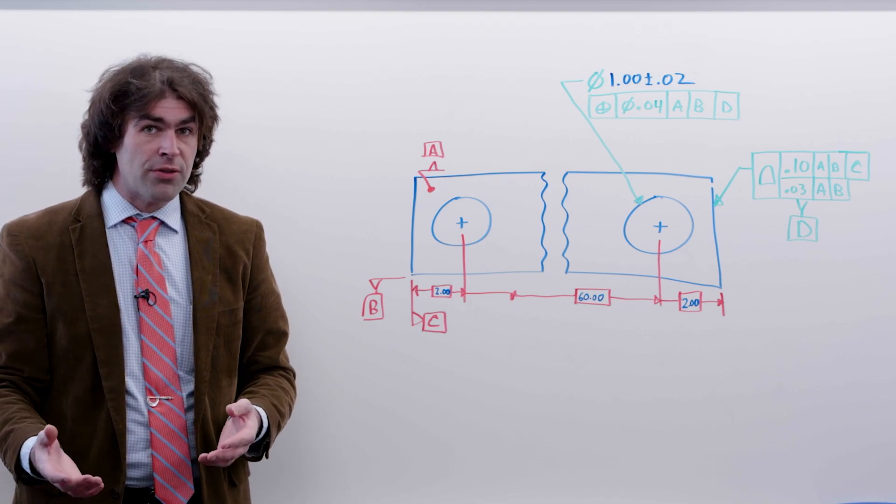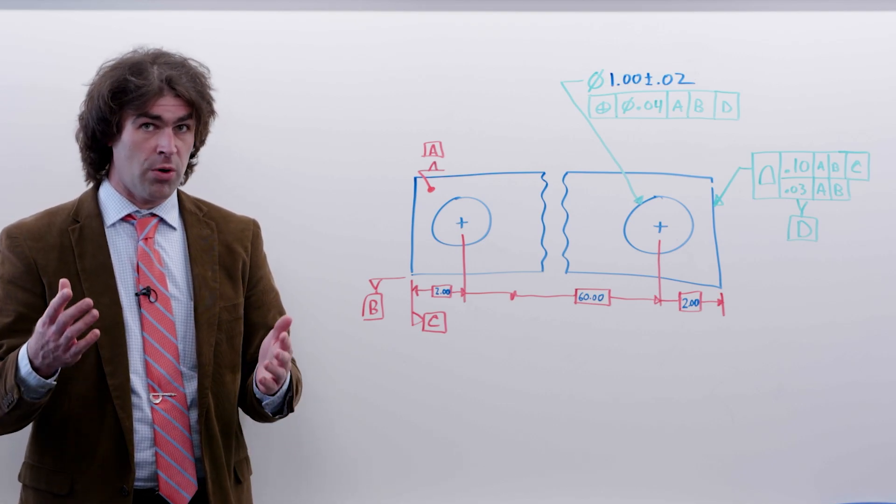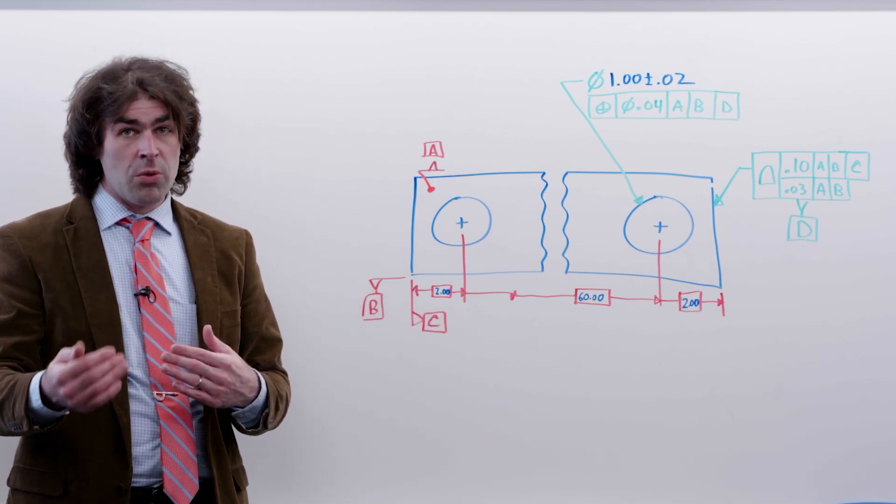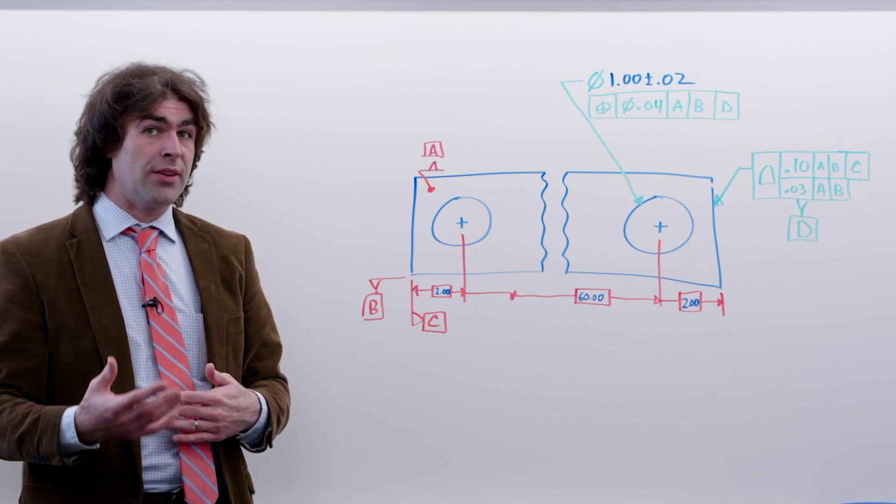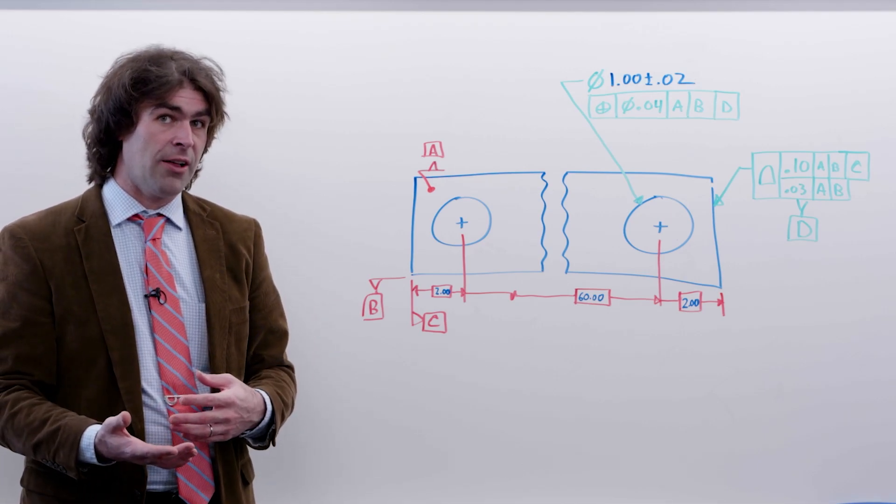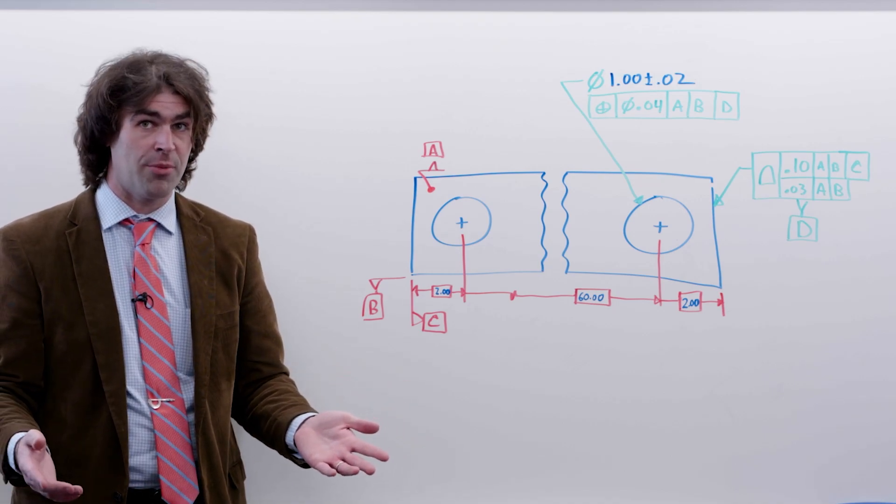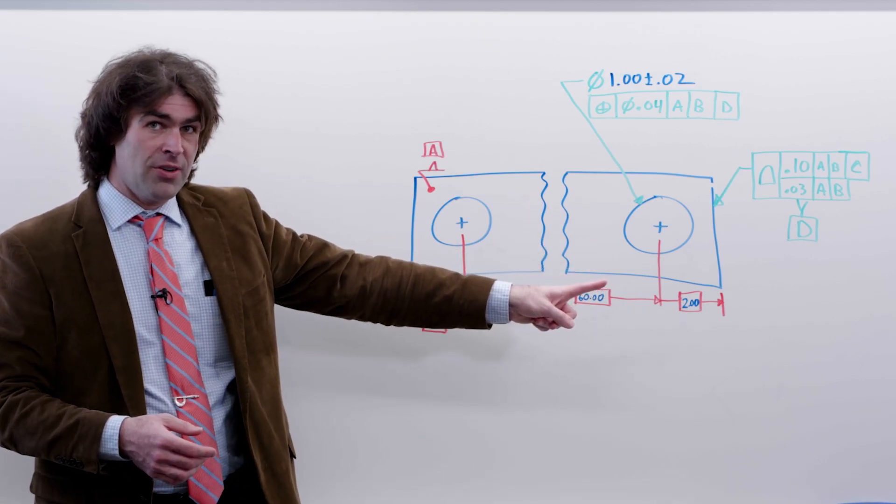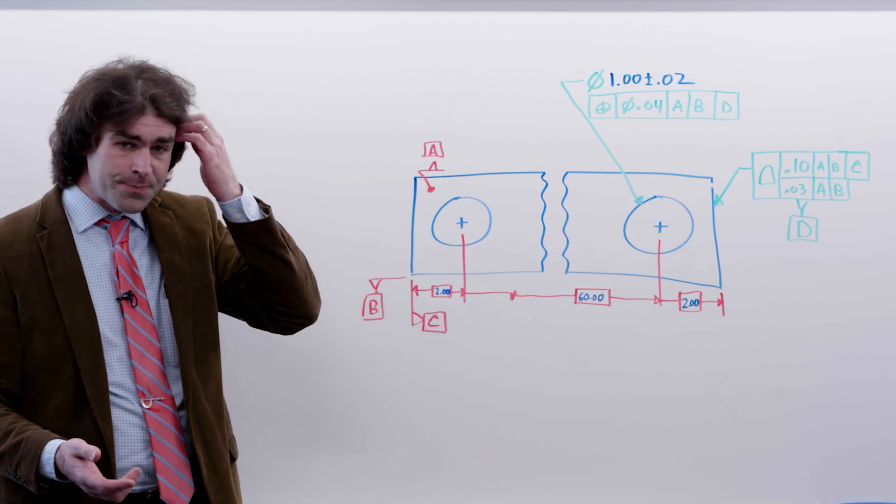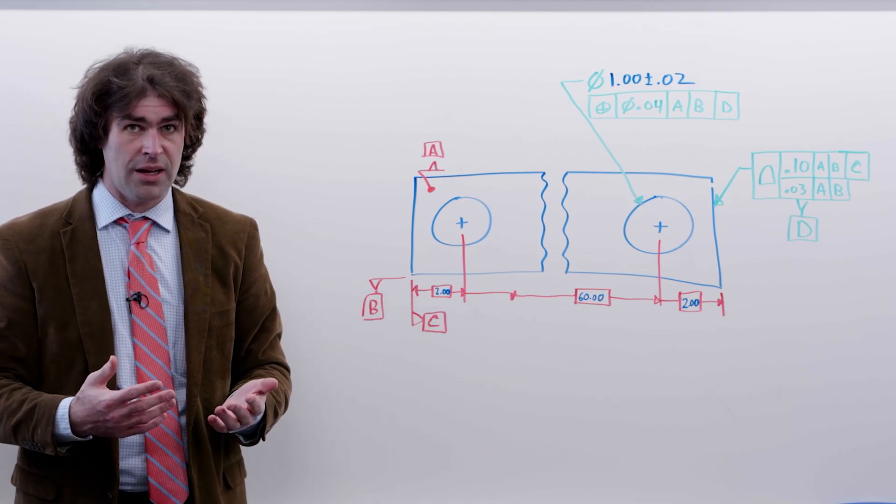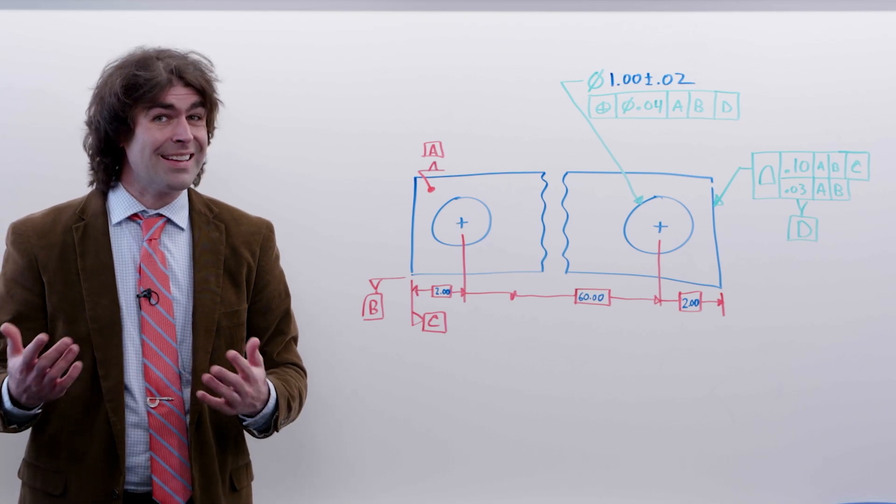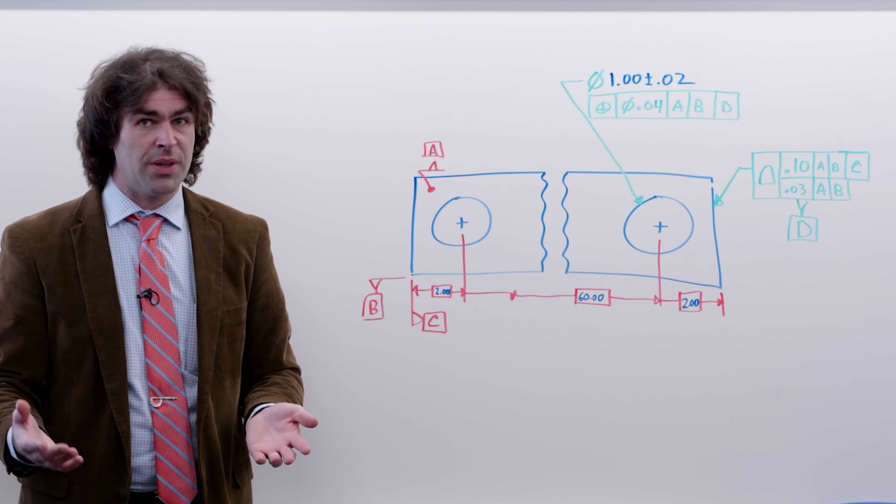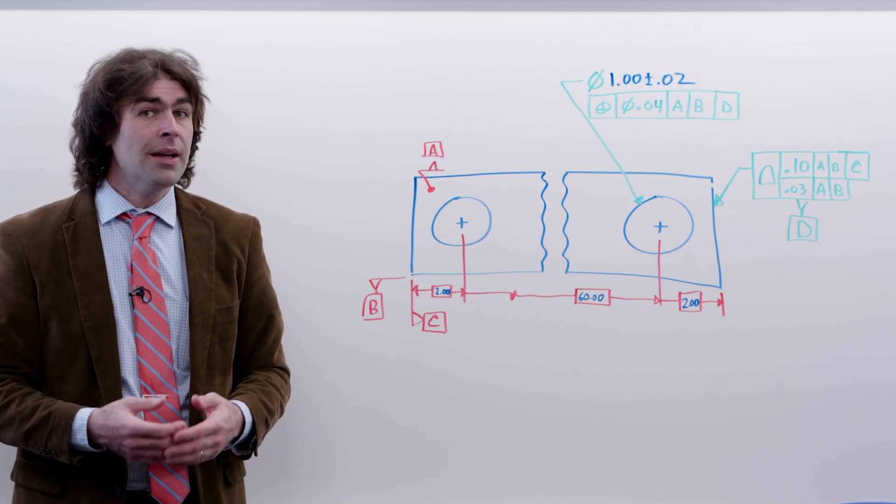The more datum reference frames you have on your drawing, the more of this you're going to get. Each datum reference frame really should be related to each other with basic dimensions and geometric tolerances, just like when you qualify your original datum reference frame. You really wouldn't want to establish another datum with a plus or minus dimension. That's kind of a no-no. I don't know if it's explicit in the ASME standard. You really just don't want to do it though, the same way you wouldn't have a secondary datum that's not qualified to the primary datum.